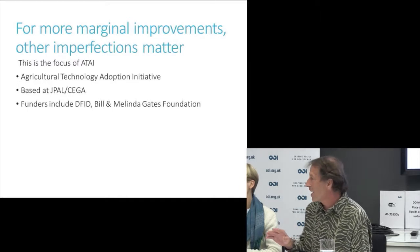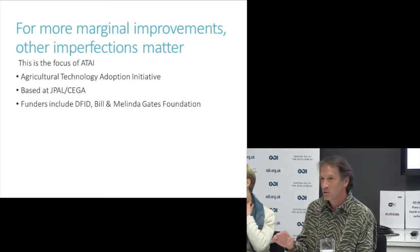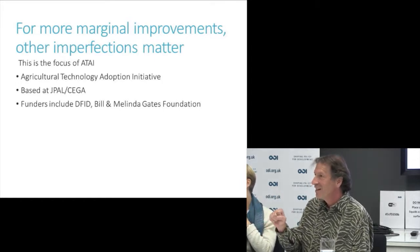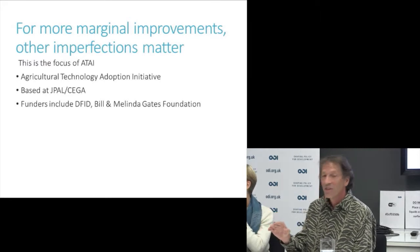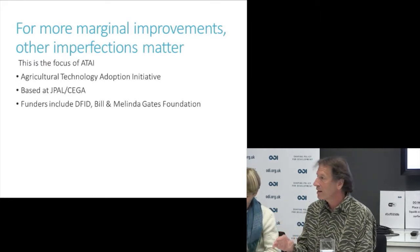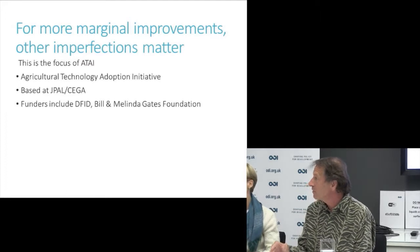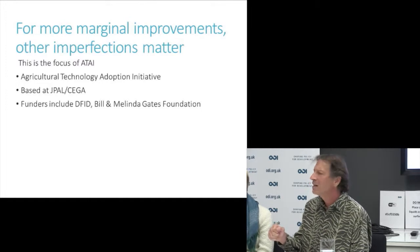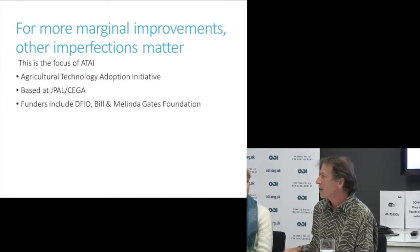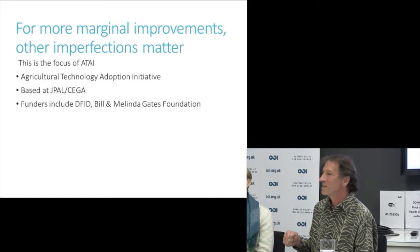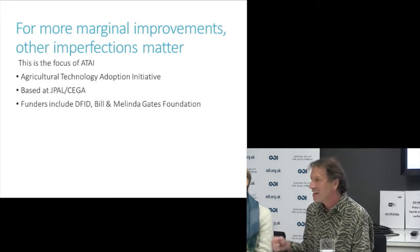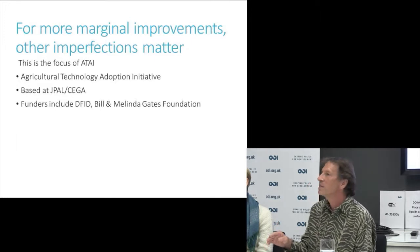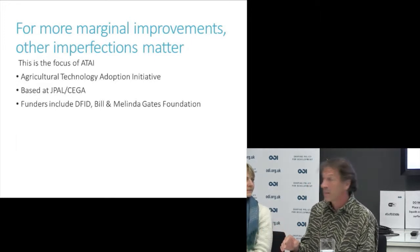But we can't just sit around waiting for a brilliant new crop to appear from some scientist. We've got to be supporting them. In the meantime, there are other innovations that could make farmers better off, with marginal improvements coming up year after year. A good agricultural research system will be generating slight improvements to new seeds, new techniques, or new machines. For these more marginal improvements, other market imperfections matter a lot.